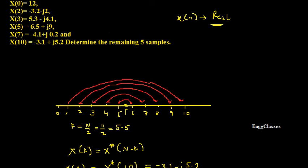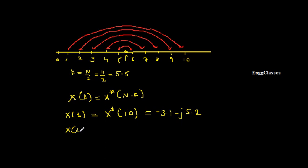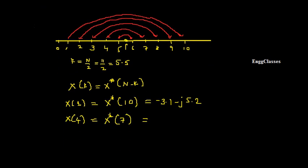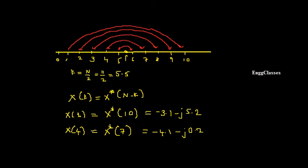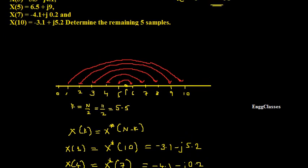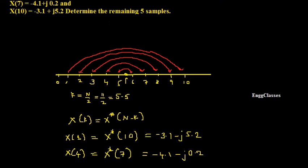X(0), X(2), and X(3) are already given. Next, finding X(4): X(4) = X*(N − k) = X*(11 − 4) = X*(7). X(7) is given as −4.1 + j0.2, so X(4) = −4.1 − j0.2. Only the sign of the imaginary part changes. So X(4) = −4.1 − j0.2.